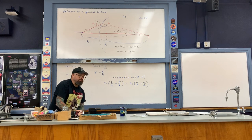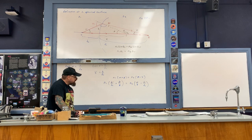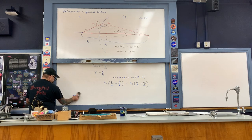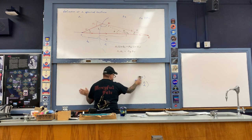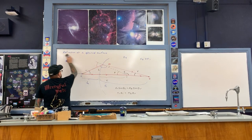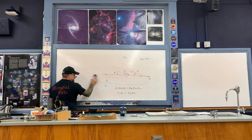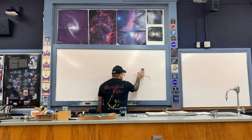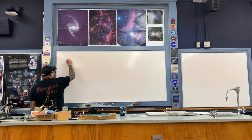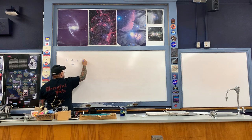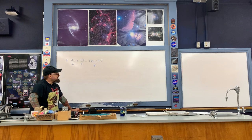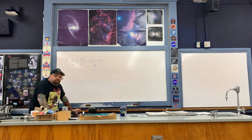We end up with an equation relating the three distances — DO, DI, and the radius of curvature — as well as the two indices of refraction. After algebraically manipulating the expression, we arrive at the final equation. As mentioned earlier, there is a sign convention associated with this equation, and that sign convention later carries on into lenses.